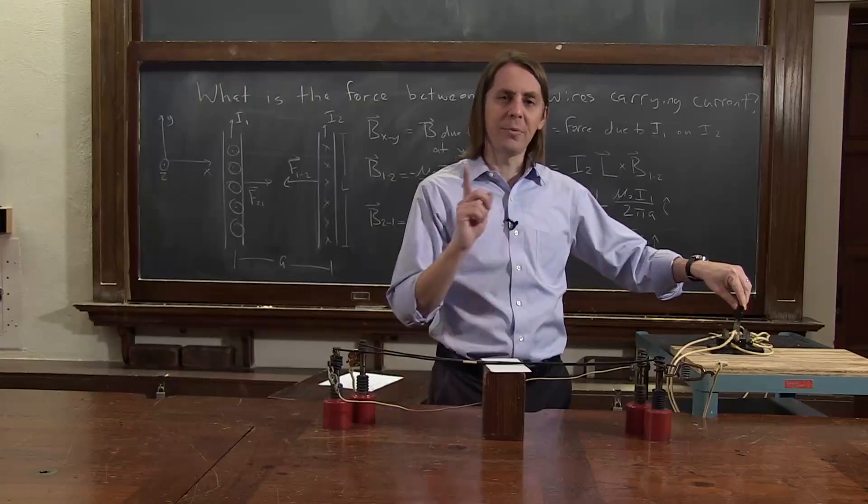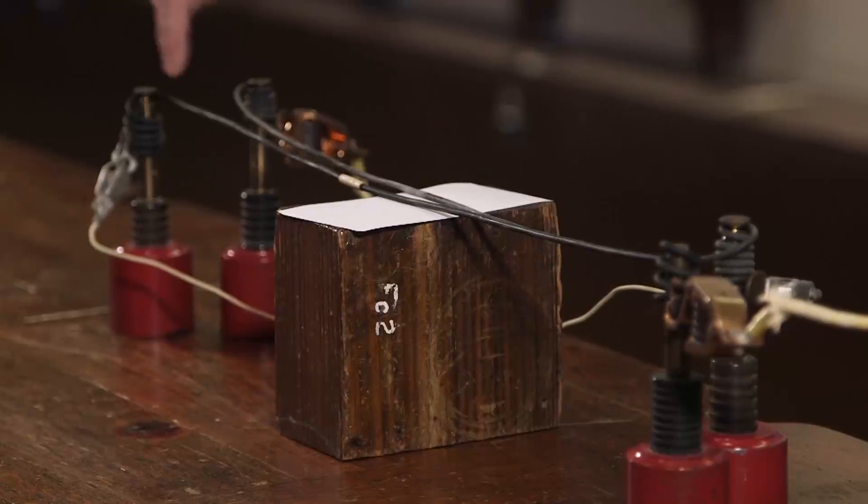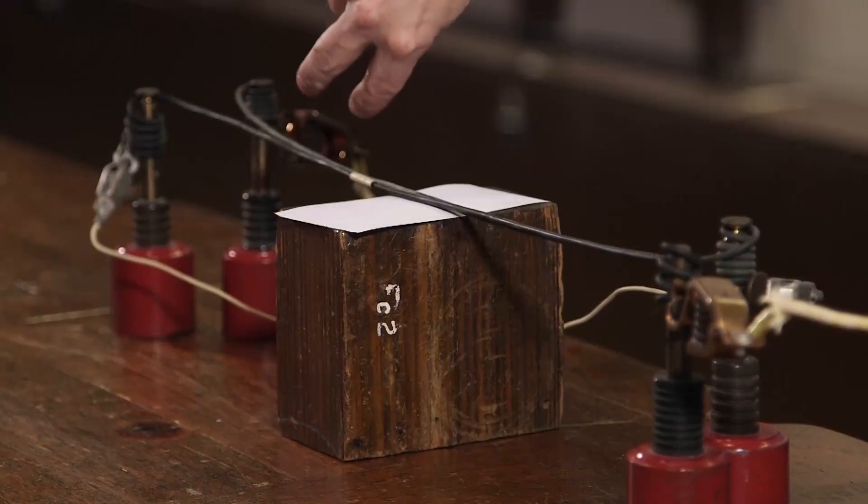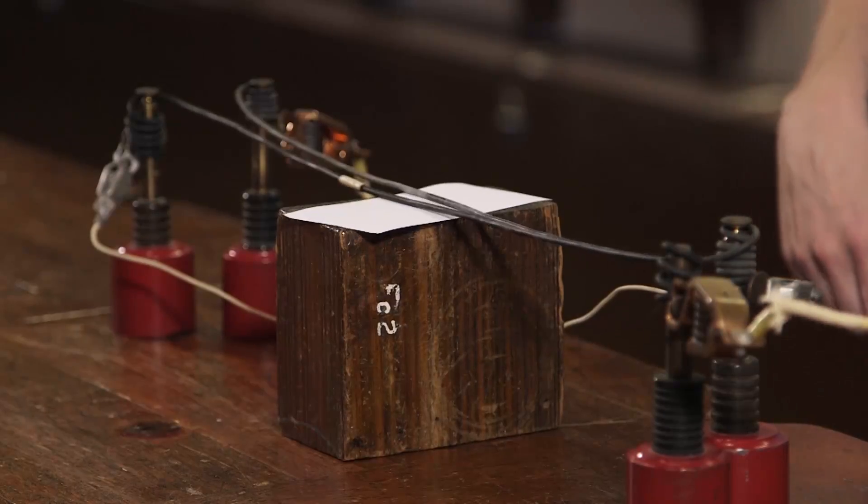Now, I can flip the switch the other way, and then instead of the current going this way, the current goes this way. But it also goes this way in both wires. So basically, the current can both go this way and it's attractive, or the current can both go this way and it's attractive.